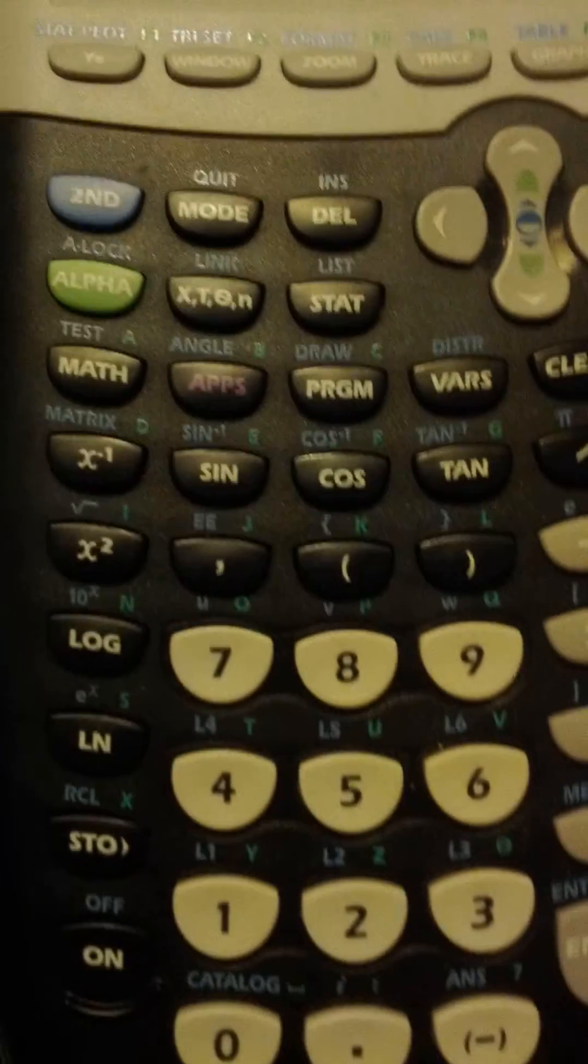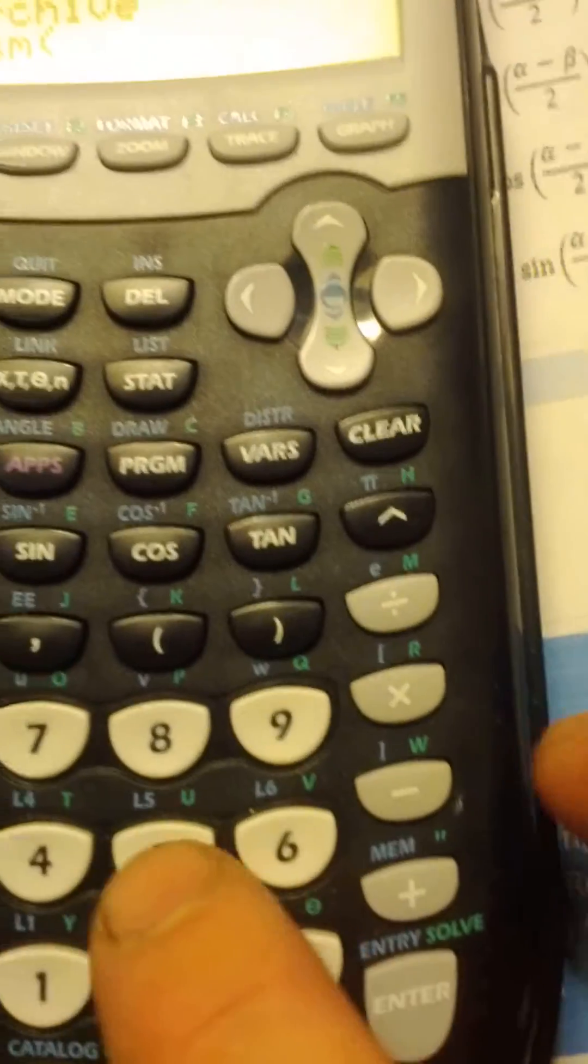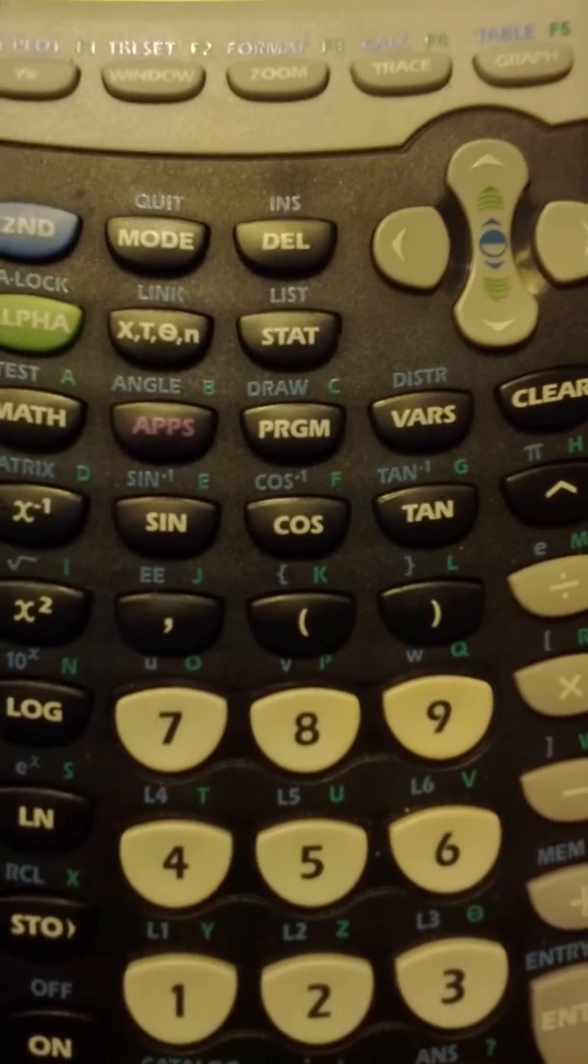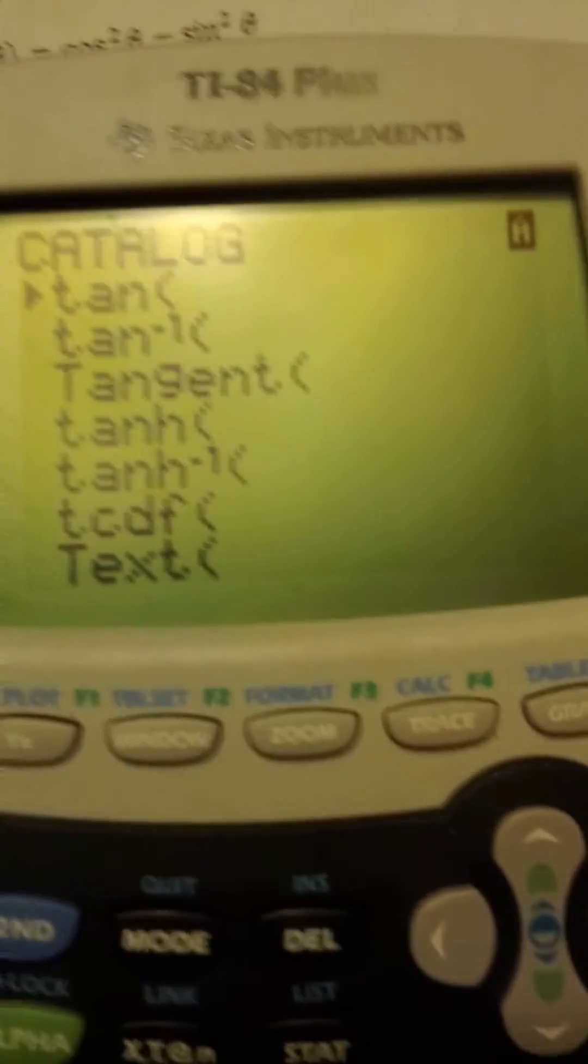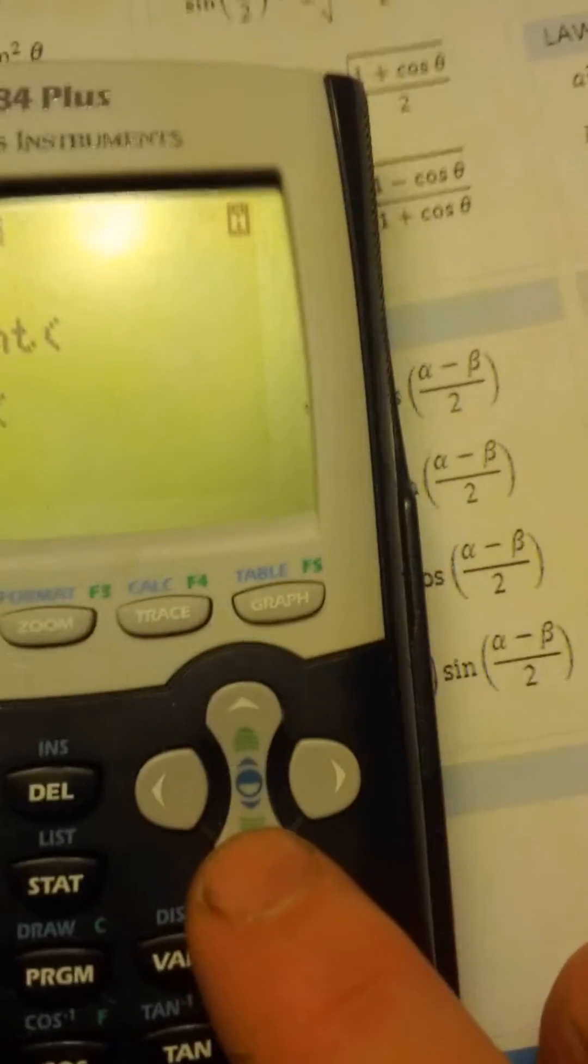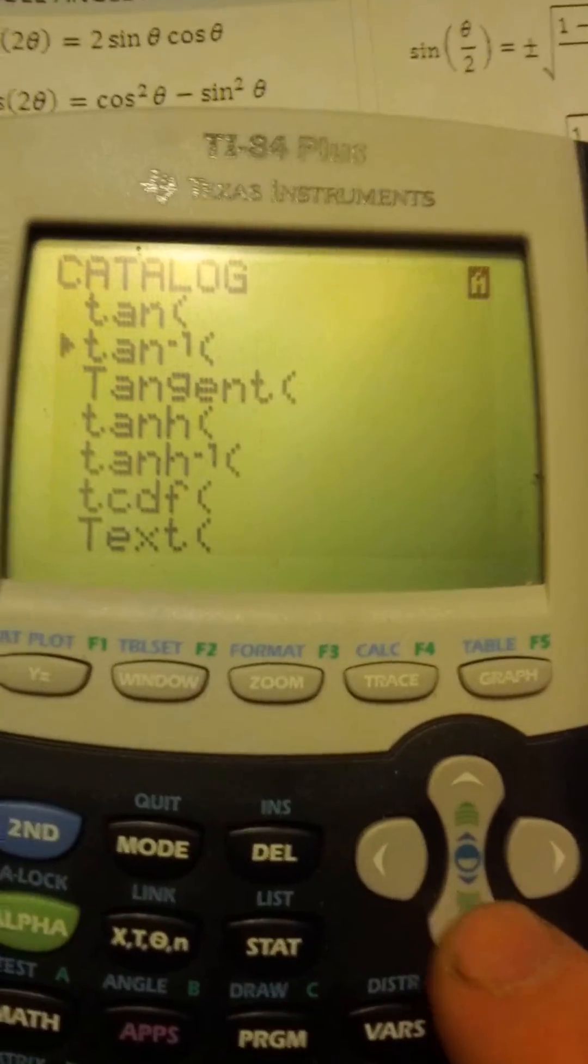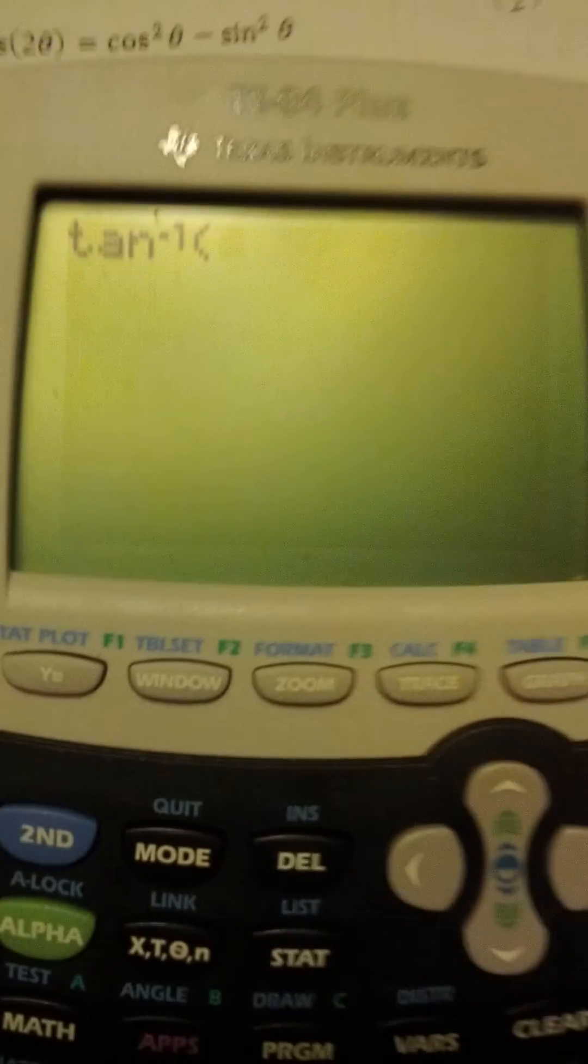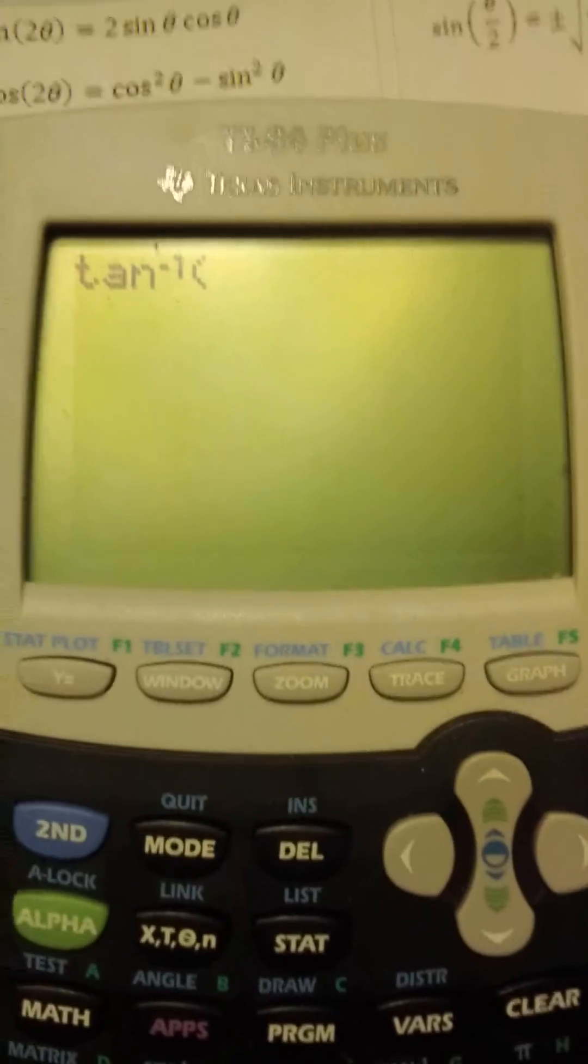These little green letters on the keypad can help you skip ahead, so I'm going to hit T. Now I'm in the T section. There it is, inverse tangent. I'm going to scroll down and hit enter. Inverse tangent of 8 over 7.